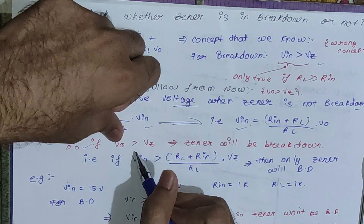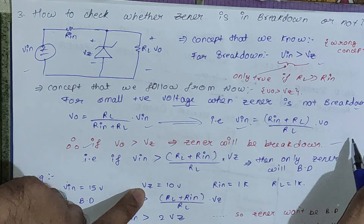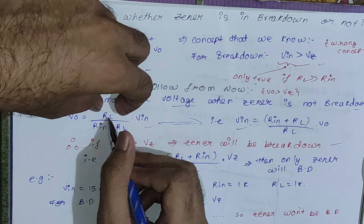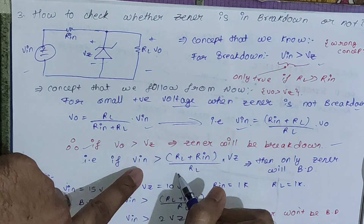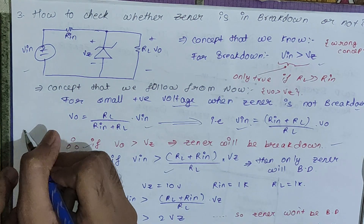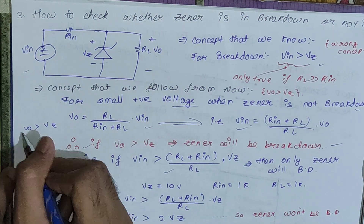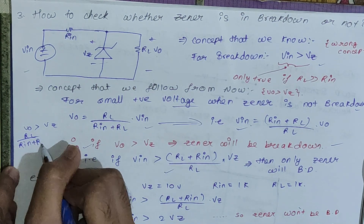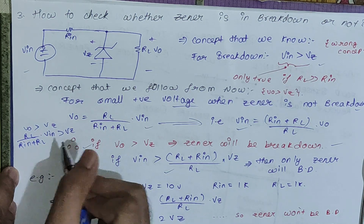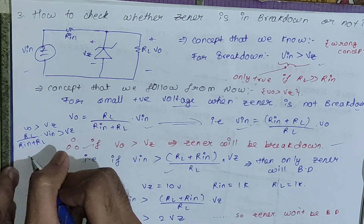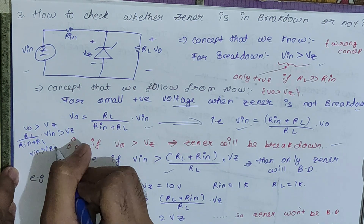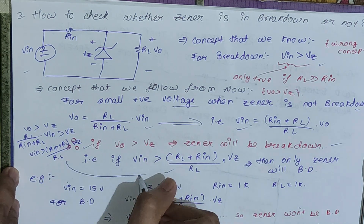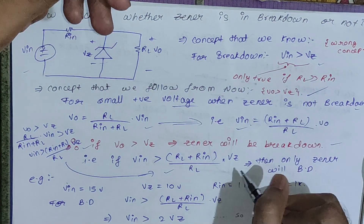You can rewrite the breakdown condition by substituting Vo: (RL / (Rin + RL)) × Vin > Vz. Rearranging, the condition becomes Vin > ((Rin + RL) / RL) × Vz. You can use either form of the equation — the condition for Vo greater than Vz, or equivalently the condition on Vin — and you will get the same result.